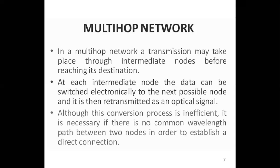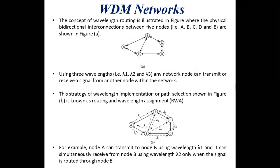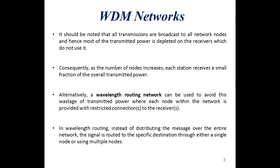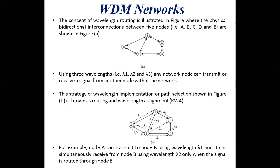The optical-to-electrical-to-optical conversion process is quite inefficient, but it is necessary if there is no common wavelength available between two nodes when a direct connection needs to be established. To recap: WDM networks efficiently use the large bandwidth of optical fibers and can be split into broadcast-and-select (power-inefficient) and wavelength routing (efficient, fewer wavelengths needed). The key advantage of wavelength routing is that you don't need as many wavelengths as there are nodes.